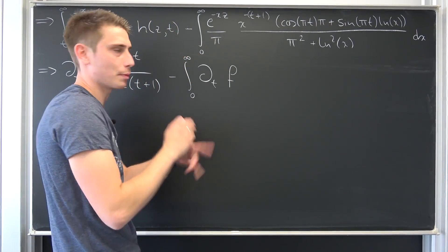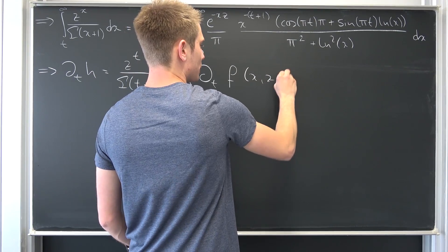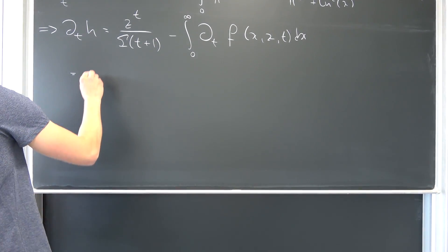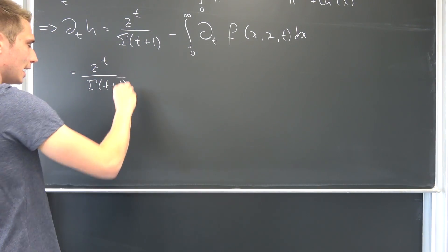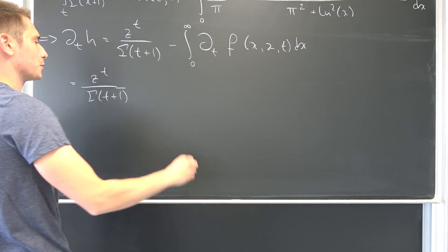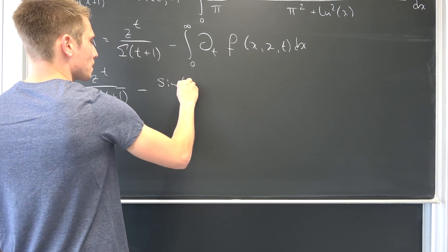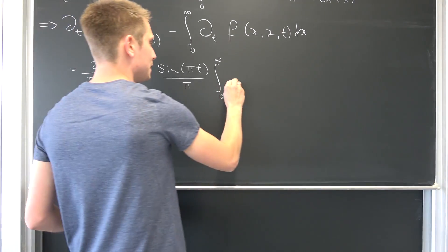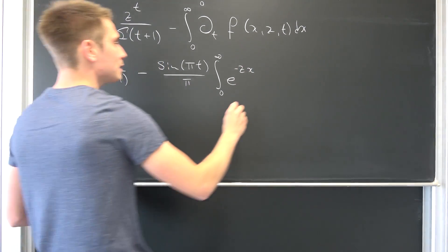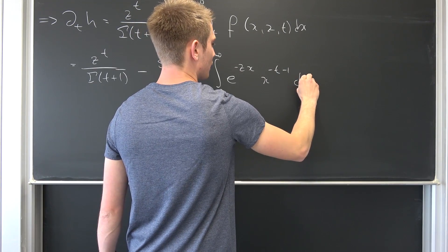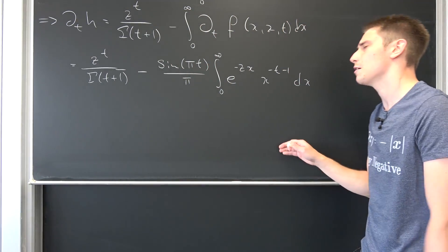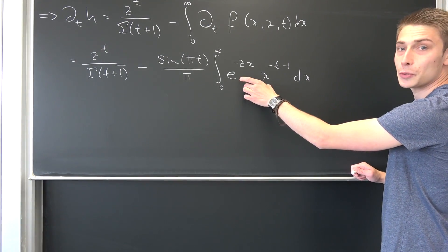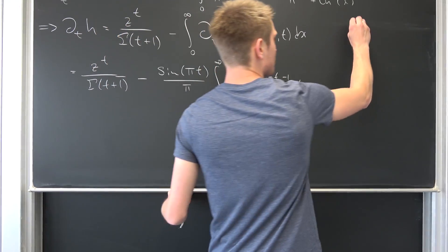It's already a long enough video. This is just a function with respect to all three variables and we are going to differentiate it. What you are going to get out is something like: a to the t power over Γ(t+1). We are going to get a factor of sine(πt) over π, times an integral from 0 to infinity of e to the negative z·x times x to the negative t minus 1 power, integrated with respect to x. That's a lot of stuff to remember.